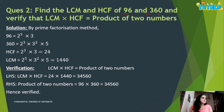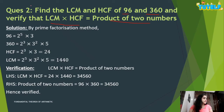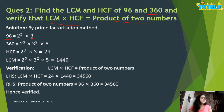Next, find the LCM and HCF of 96 and 360, and verify that LCM × HCF equals the product of the two numbers. HCF is the product of the smallest power of each common factor. First, find the prime factors: 96 can be written as 2 raised to power 5 into 3.